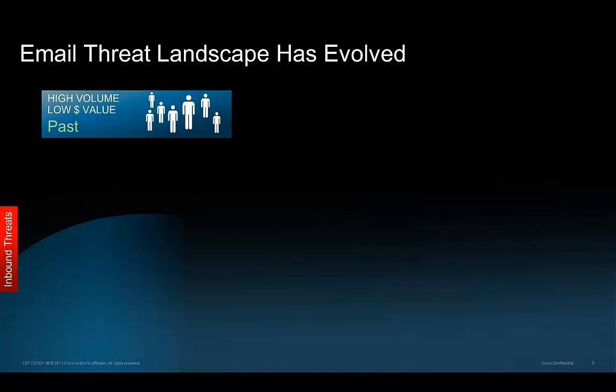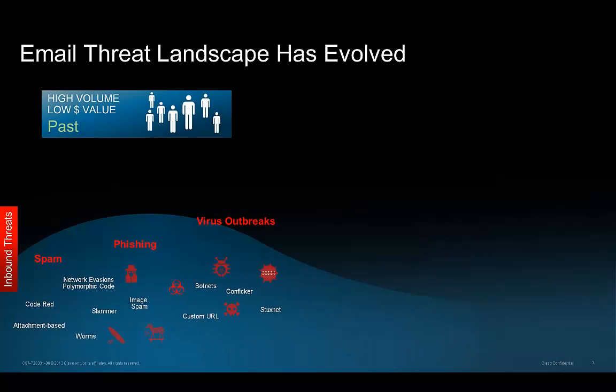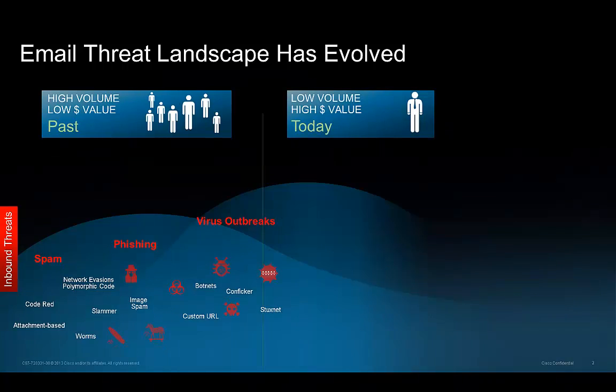In the past we've had high volume, low dollar value threats — folks sending millions of messages with very low click-through rates. With this you're seeing things typically from infections such as botnets and worms coming through email. These were things that were high volume but easy to detect.